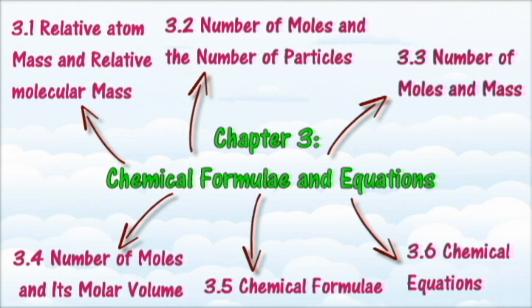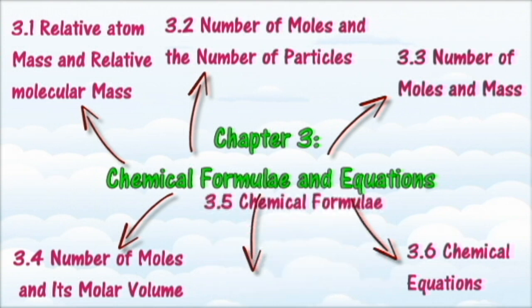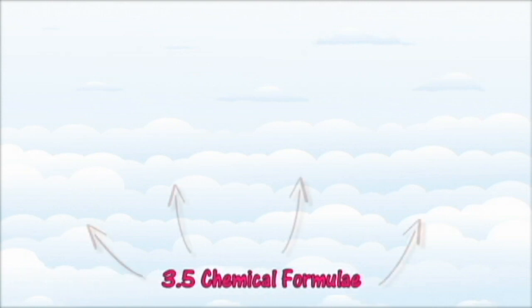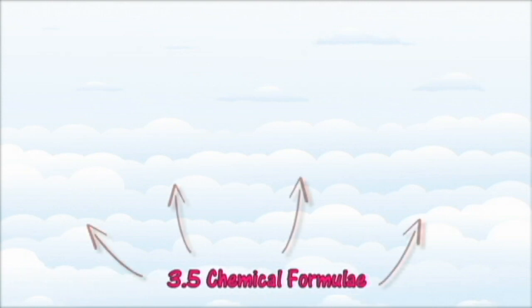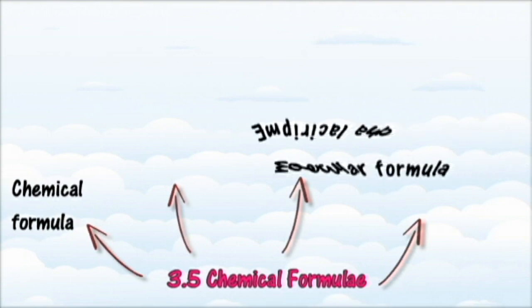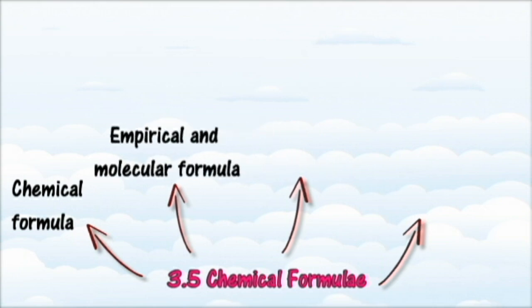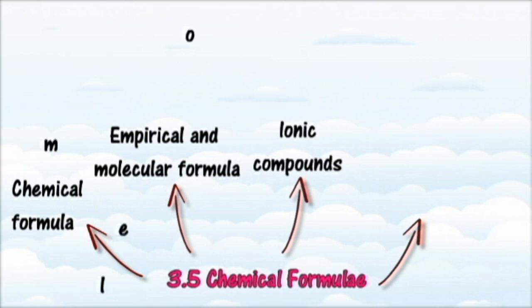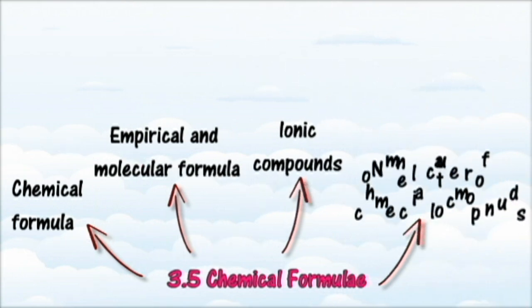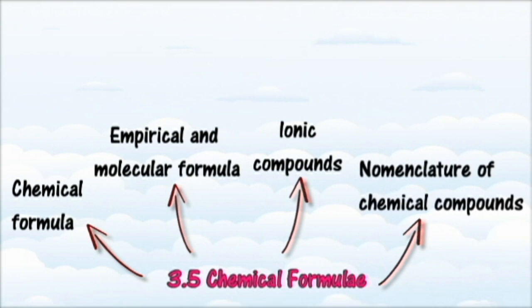In Section 3.5, we will learn about the chemical formula of an element. At the end of this section, you should be able to state the meaning of chemical formula, empirical formula, and molecular formula; determine the empirical and molecular formula of substances; compare and contrast empirical formula with molecular formula; solve numerical problems involving empirical and molecular formulae; write ionic formulae of ions; construct chemical formulae of ionic compounds; and state the names of chemical compounds using IUPAC nomenclature.